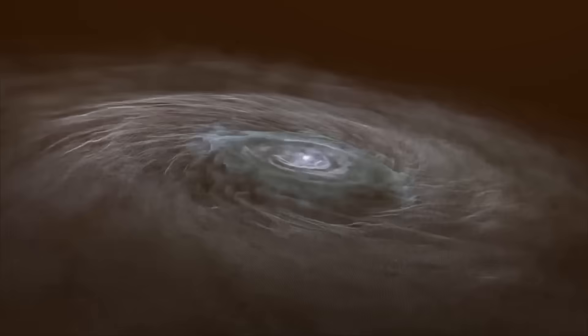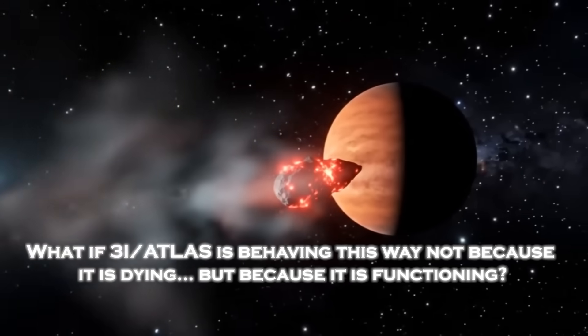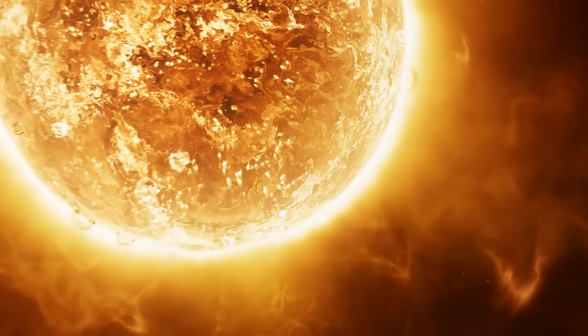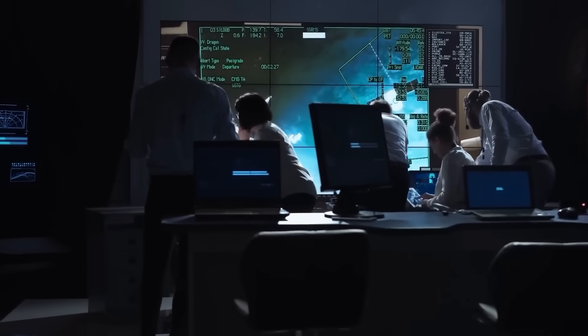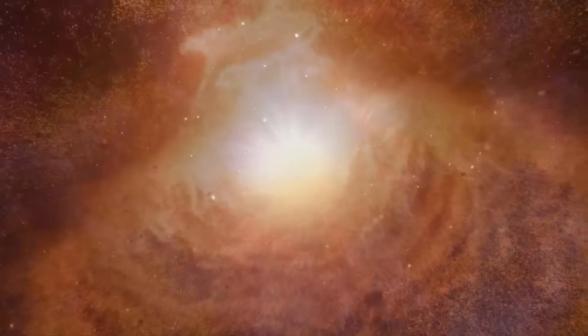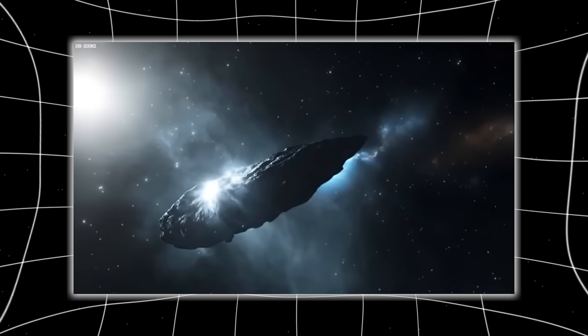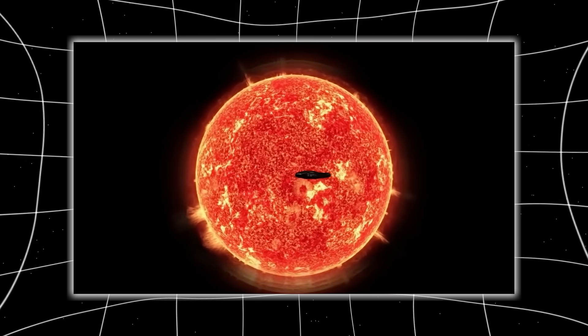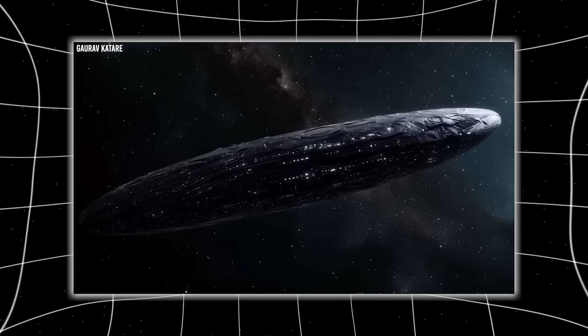Or what if, and this is the question no one wants to ask, what if 3i Atlas is behaving this way not because it is dying, but because it is functioning? Functioning according to laws or mechanisms we don't understand. Functioning according to a design shaped by forces older than our sun. Functioning in a way that makes our distinctions between natural and engineered look naïve. Because the truth is simple. Comets should not survive what this object has survived. Comets should not eject what this object ejects. Comets should not glow how this object glows. Comets should not accelerate how this object accelerates. Comets should not behave the same way when viewed from Earth and Mars. And yet this one does.